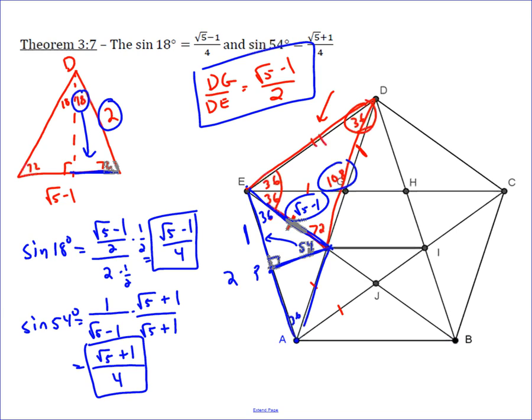The sine of 18 degrees is root 5 minus 1 over 4. So two nice exact values derived from this relationship we learned about in a regular pentagon.